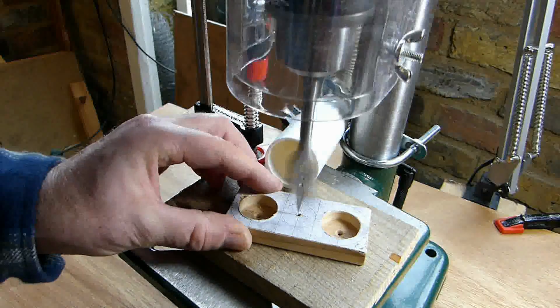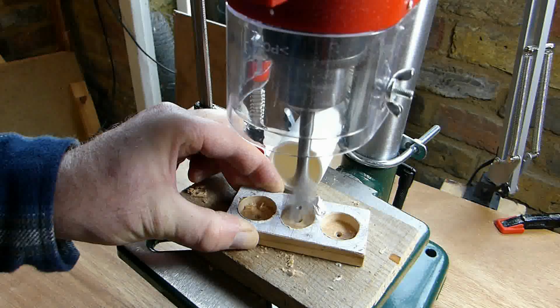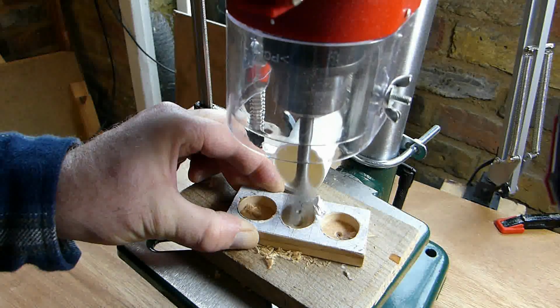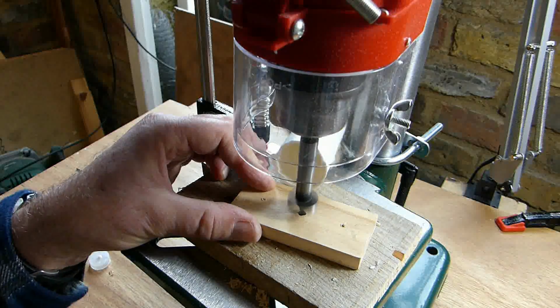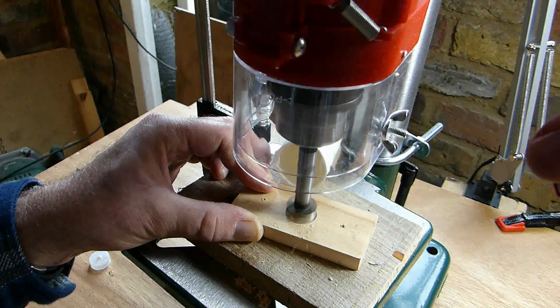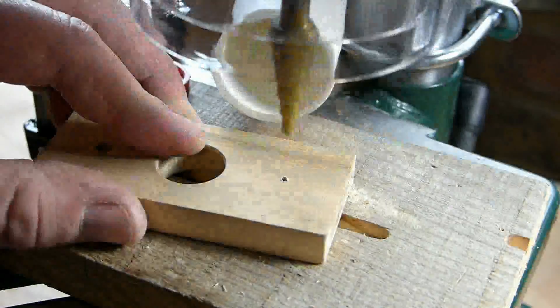I used a 22mm diameter spade bit to cut the hole in the centre to accept the bearing but didn't cut all the way through the wood. Instead I stopped a couple of millimetres short and then from the rear I cut a 20mm diameter hole which left a ledge for the bearing to sit against.